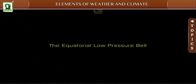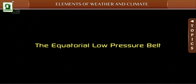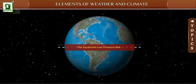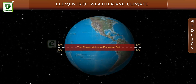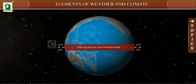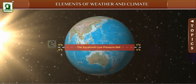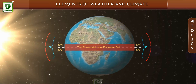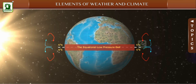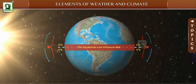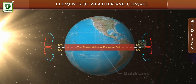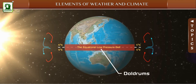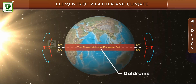The equatorial low pressure belt extends from 5 degrees north to 5 degrees south latitudes. The air at the equator gets heated; warm air being lighter rises above, causing a low pressure to develop here. This belt is also called the doldrums because it is a zone of total calm without any surface wind blowing.